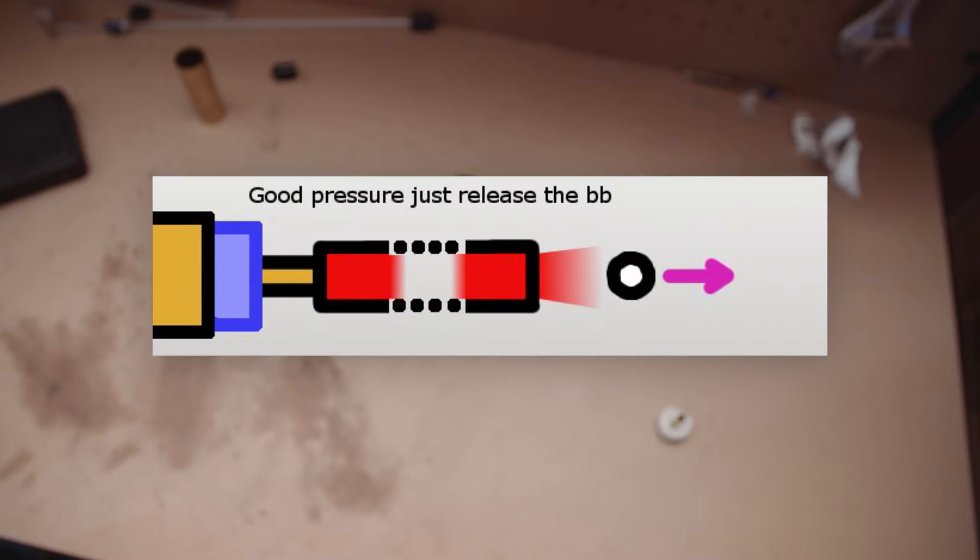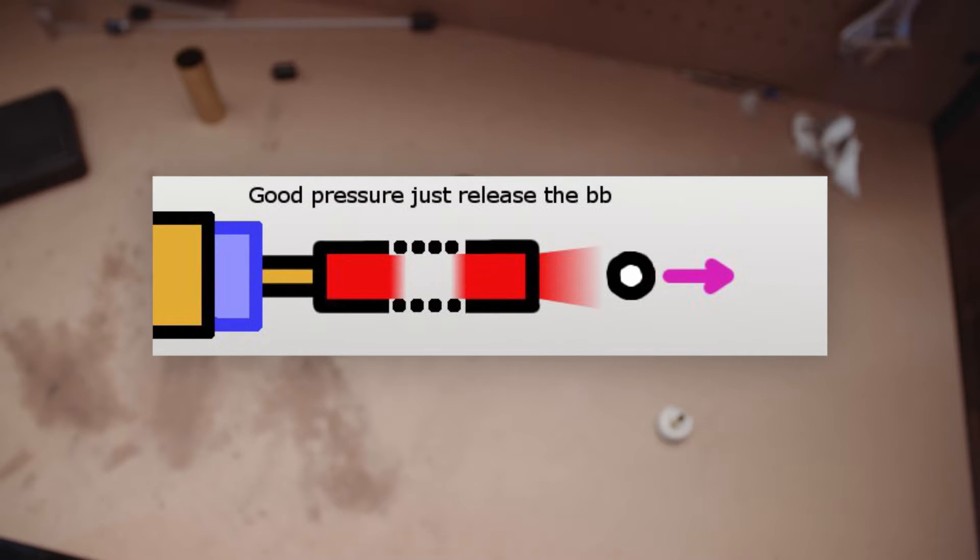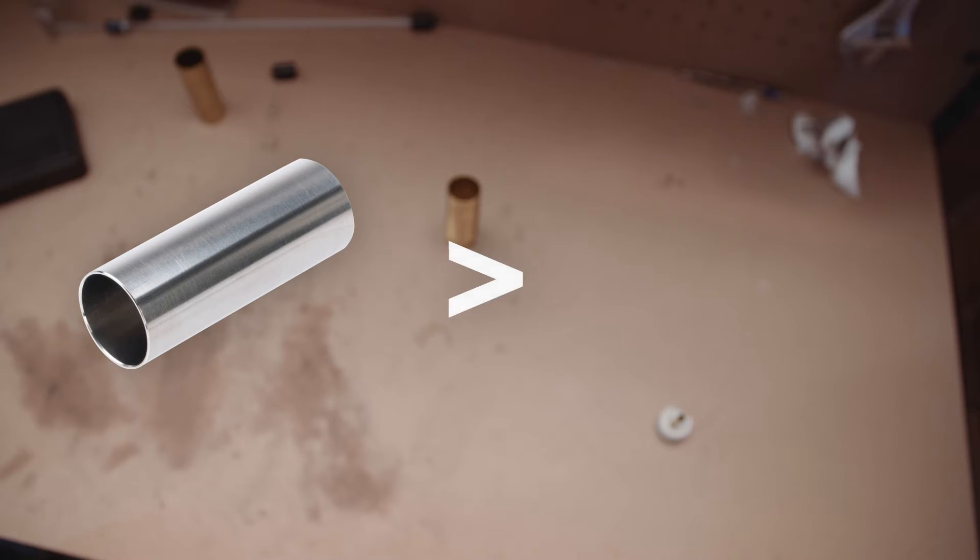Good pressure will push the gel in the most efficient way and will give you the best accuracy. The difference you want to be aiming for is the cylinder to be about 1.7 to 1.8 times that of the barrel. It doesn't matter if it's around that, so 1.6 or 1.9, but as long as you can get close to that, you'll get the best results.